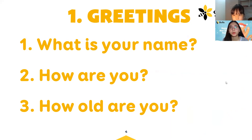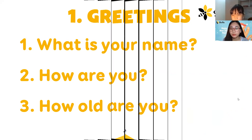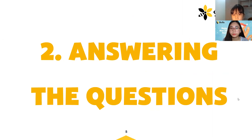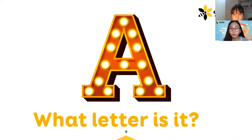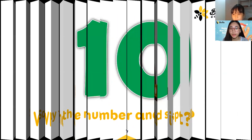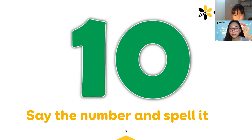You have to answer some questions I've given in my sequence. The first question for you: what letter is it? It's the letter I. Correct. And the next: what number is it? It's number 10. Can you spell for me the word ten?